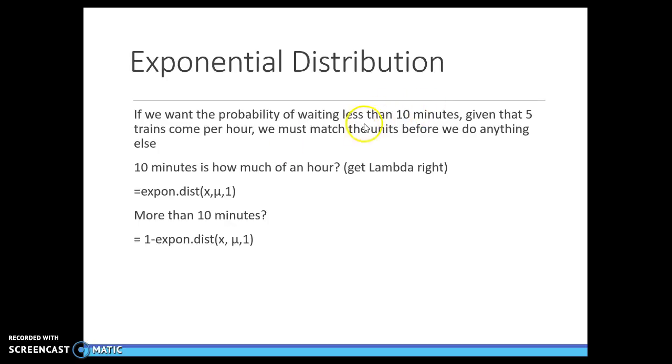So our average train is five per hour. So the easiest way to do this is to translate minutes into hours. So we would say 1/6 would be 10 minutes per hour.